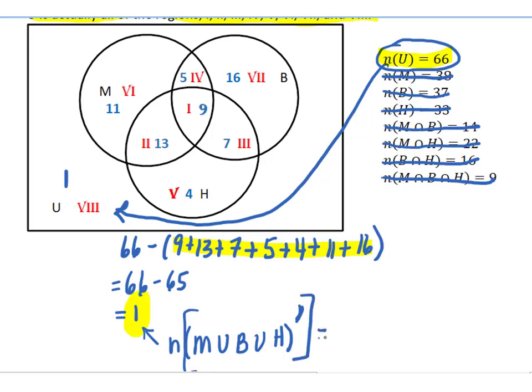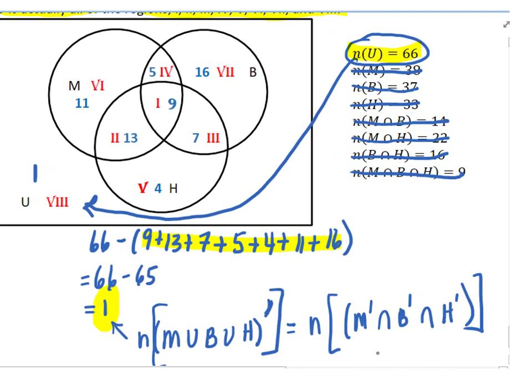I also want to mention that this region 8 could also be represented. If you apply DeMorgan's, this would be not in Mozart and not in Beethoven and not in Haydn. So these are two common ways that you might see the set comprised of only region 8 represented. Just be on the lookout that region 8, that region that's outside the circles, can be represented in a couple of different ways.